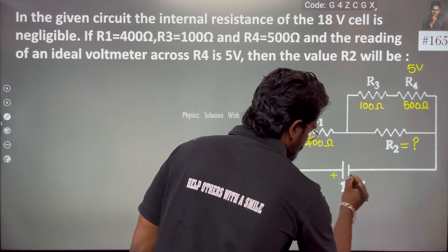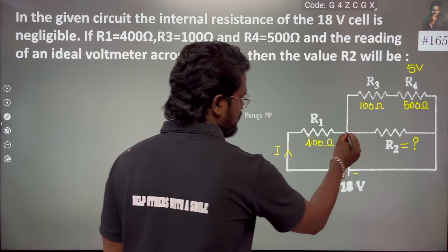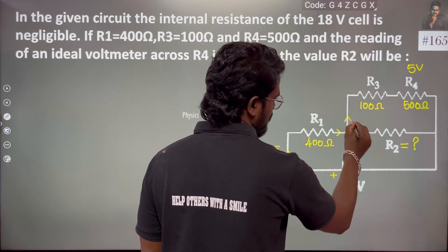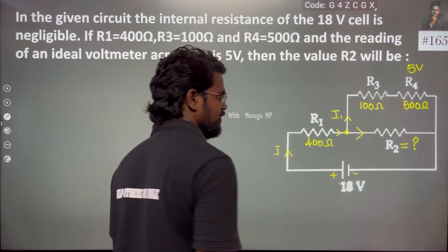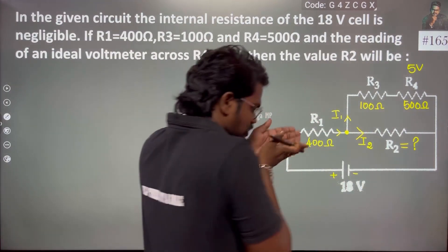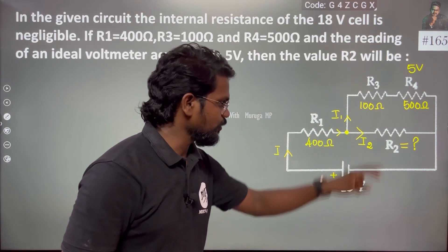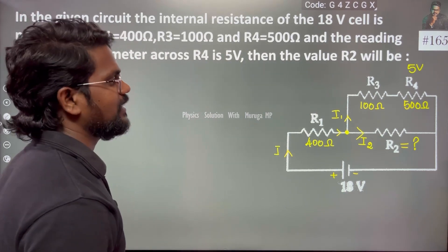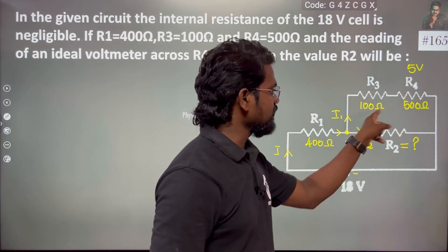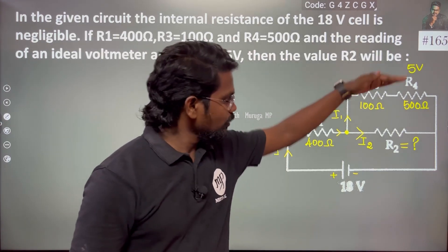From the positive terminal to the negative terminal, current flows. At the junction, the current I splits - I2 goes through one branch. R3 and R4 are in series combination. The current goes through and then comes back. If the current is different, the potential is different.